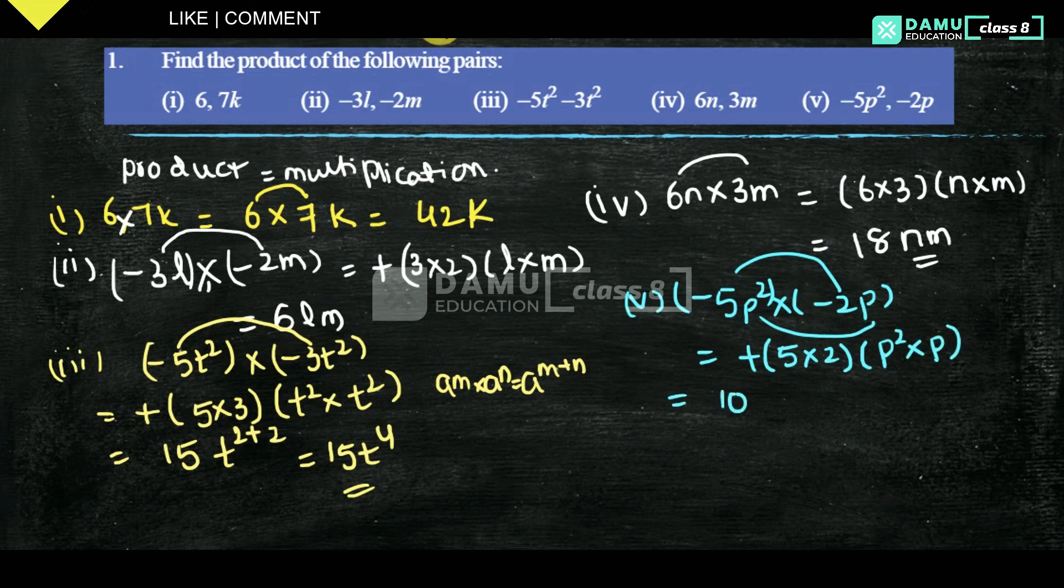So 5 twos are 10 into p² into p, that is p² plus 1. So 10p³, that is the answer. Thanks for watching, please subscribe.